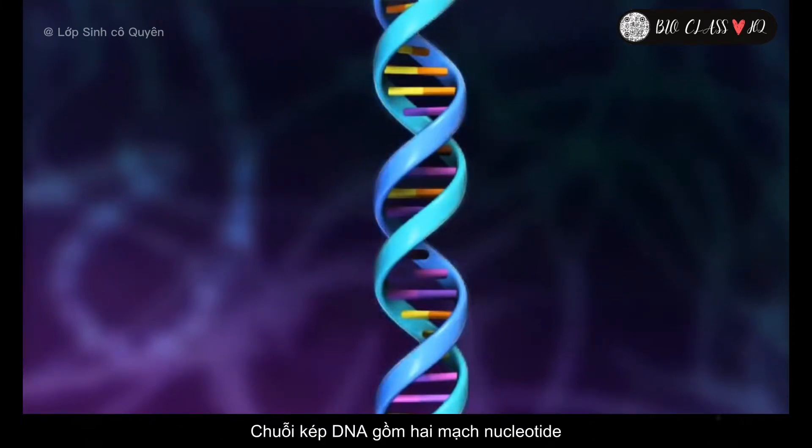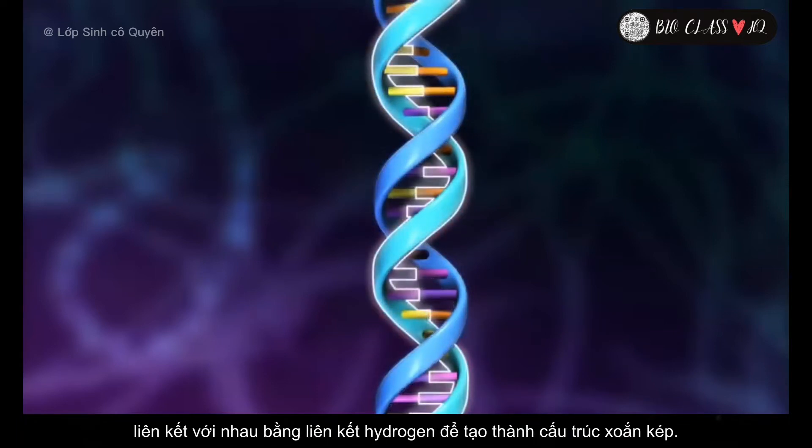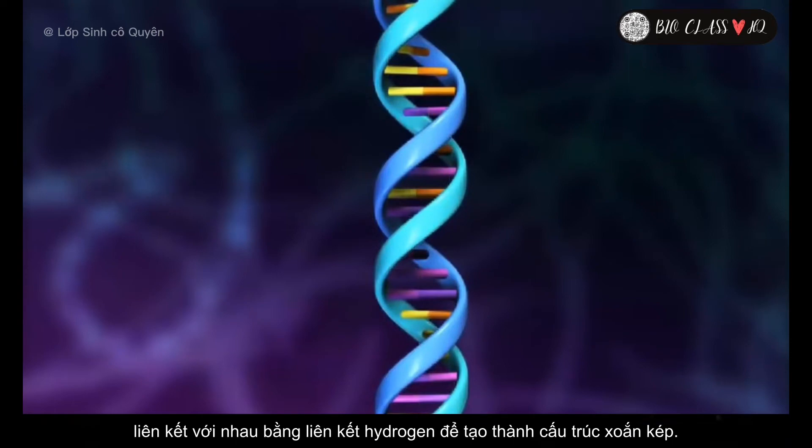Double-stranded DNA is a polymer of two strands of nucleotides, which are hydrogen-bonded to each other to form a double helix.